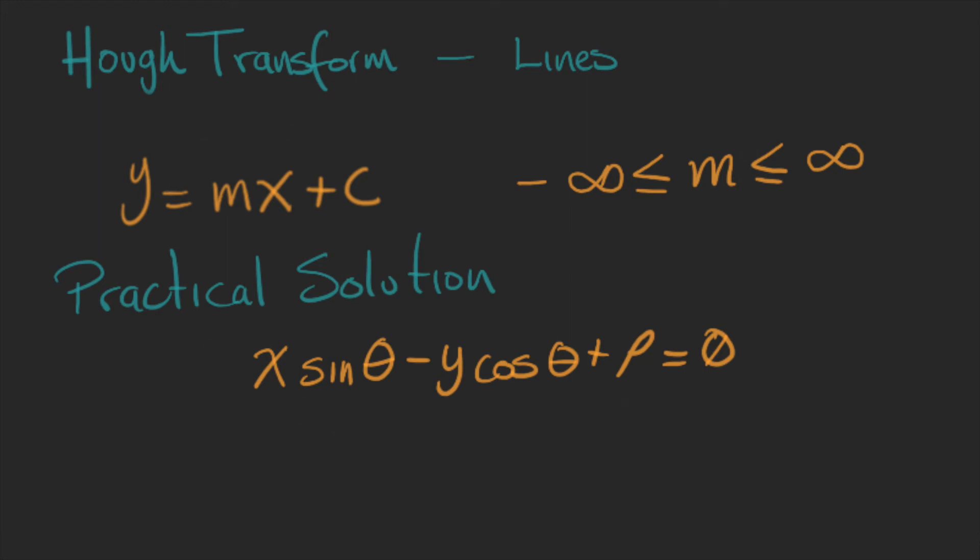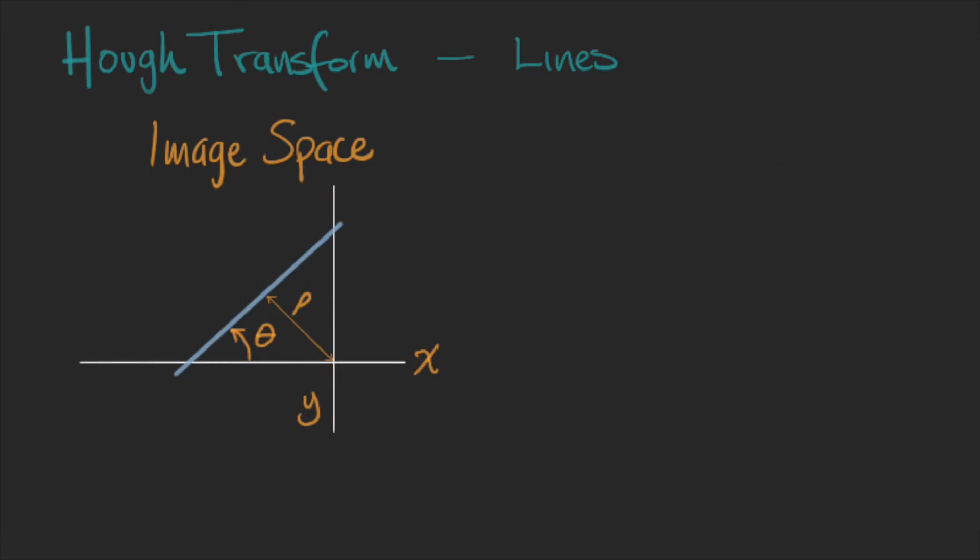Here we know that theta is the angle of the line, and it can only range from 0 to pi. And rho is the distance of the line to the origin.